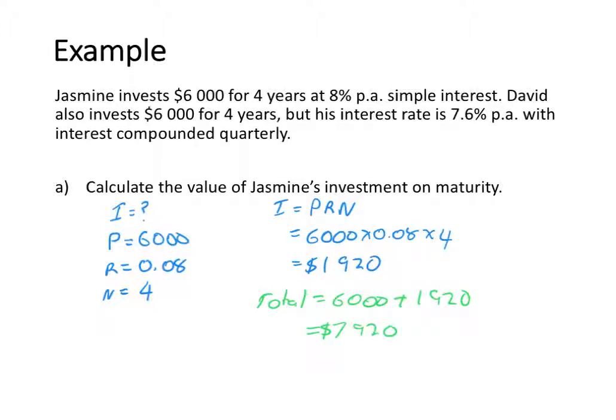Her total amount at the end of the 4 years is 6,000 plus 1,920, which equals $7,920. So at the end of the 4 years, Jasmine is going to have $7,920.